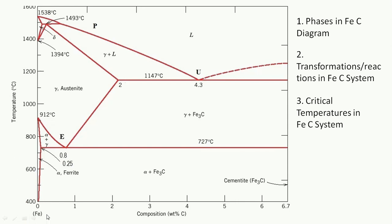On the left-hand side of the diagram, the metal present is iron (Fe), and on the right-hand side, it is carbon. As we move to the right side of this diagram, the amount of carbon increases - carbon is 0 at the left, then 1%, 2%, and at the end 6.7%. Similarly, as we move upward in this diagram, the temperature of the mixture increases.